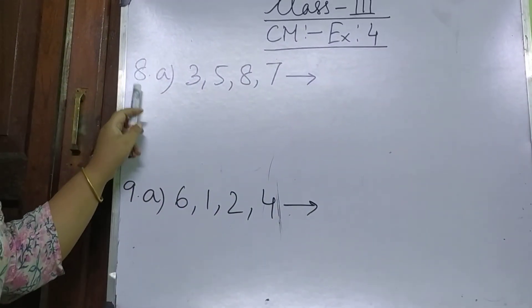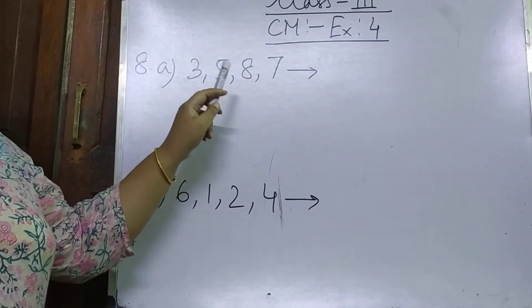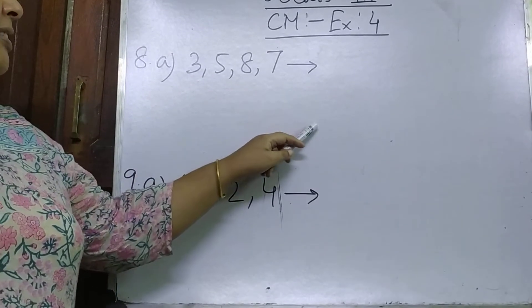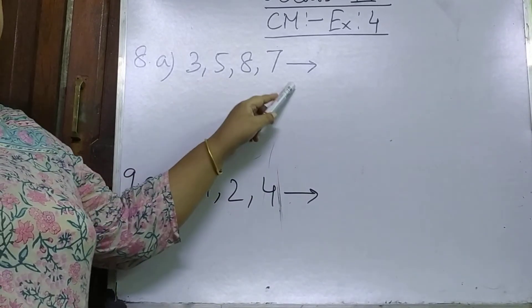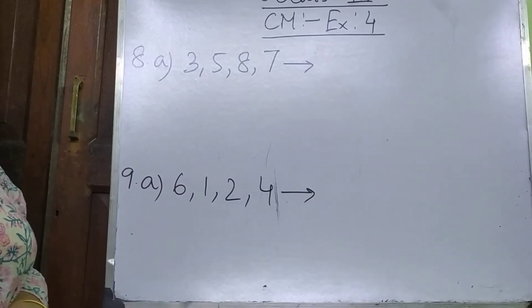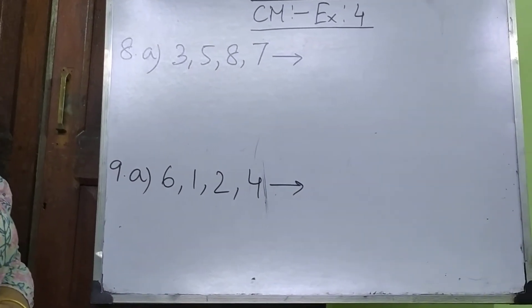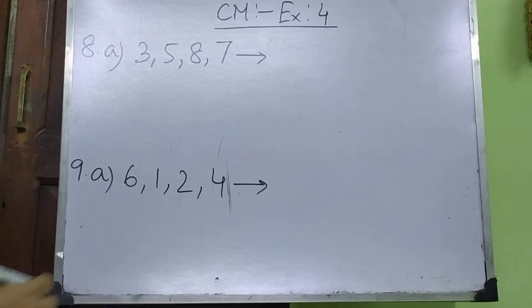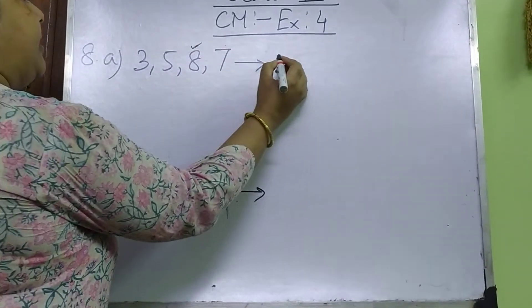Here number 8. We have to write the largest number of 4 digits that is given here. So, to form the largest number, we have to write first the largest digit that is 8.